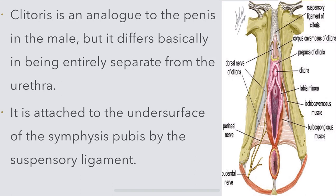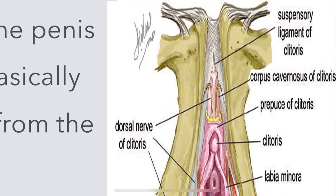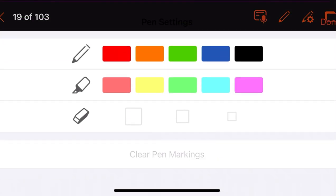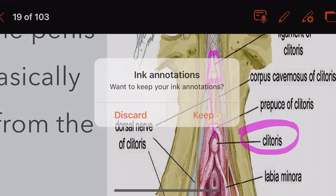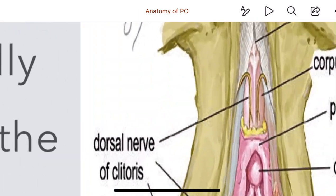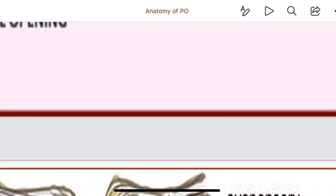The clitoris is attached to the undersurface of the symphysis pubis by the suspensory ligament. You can see this ligament here attaching the clitoris to the symphysis pubis.